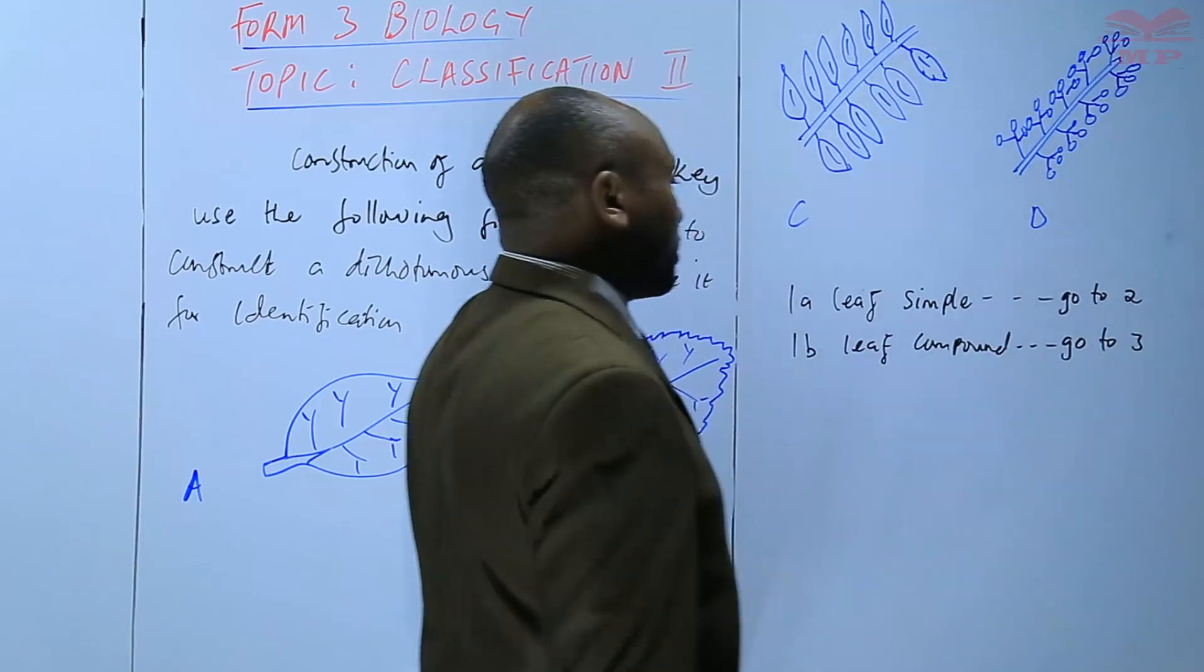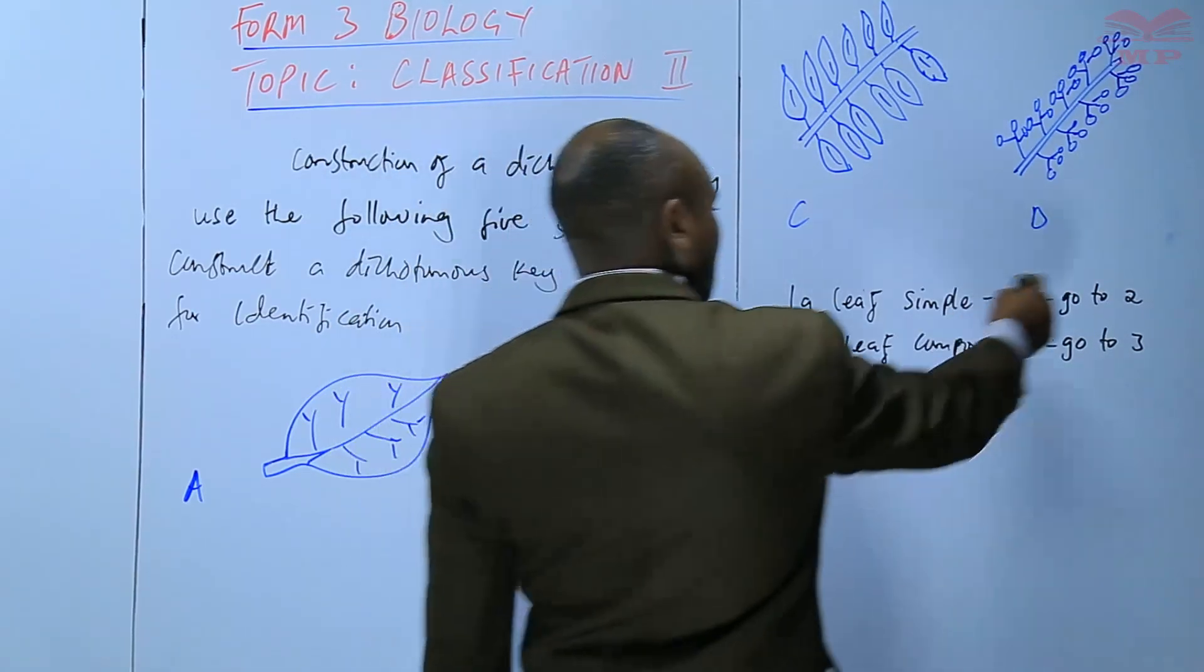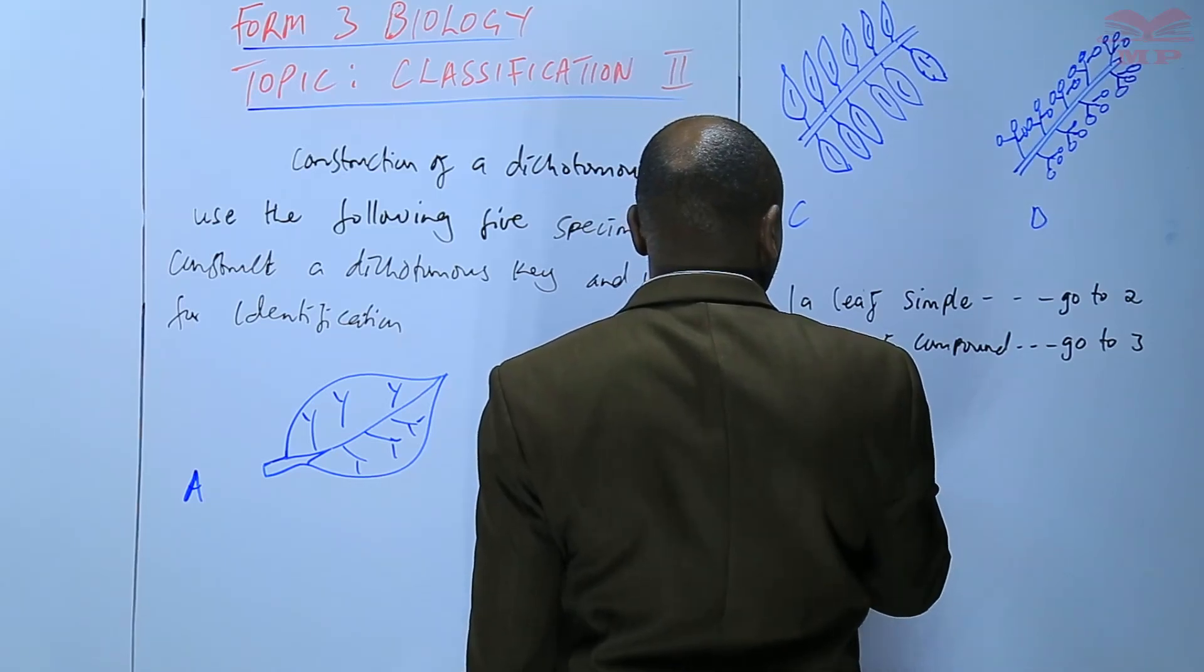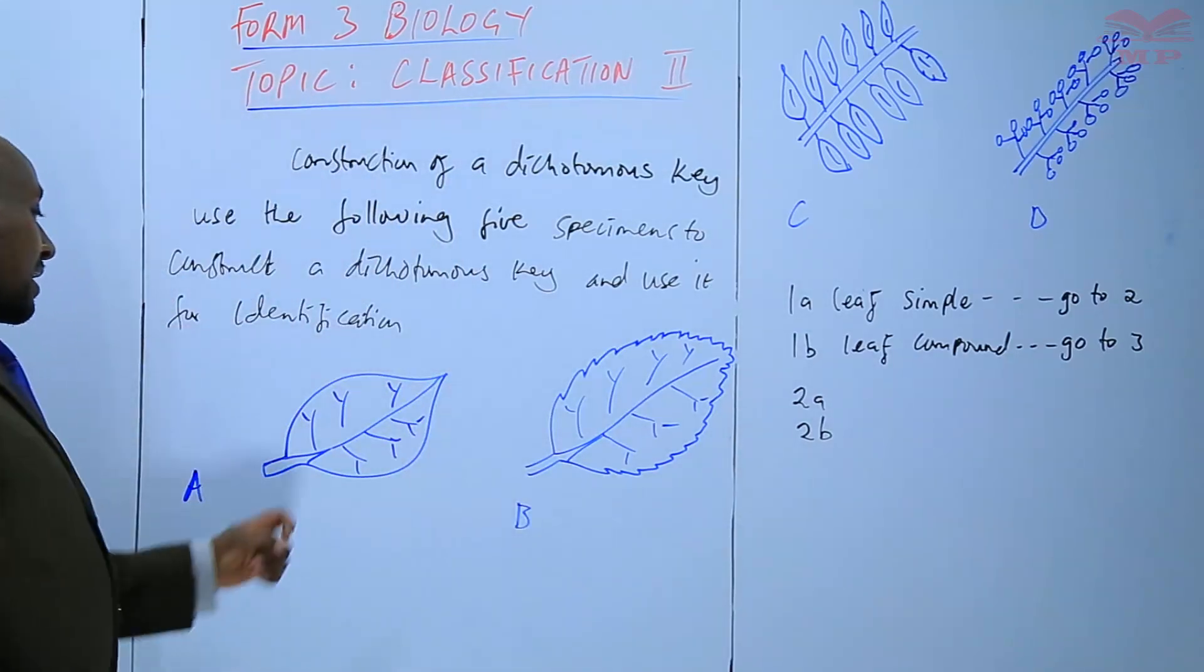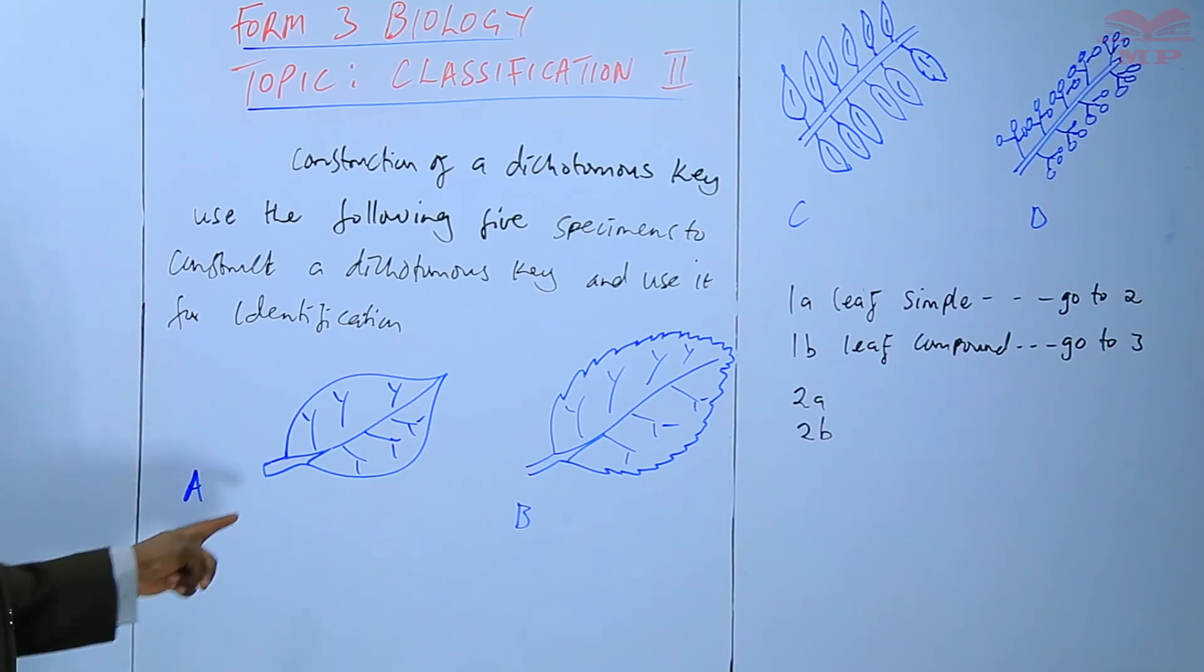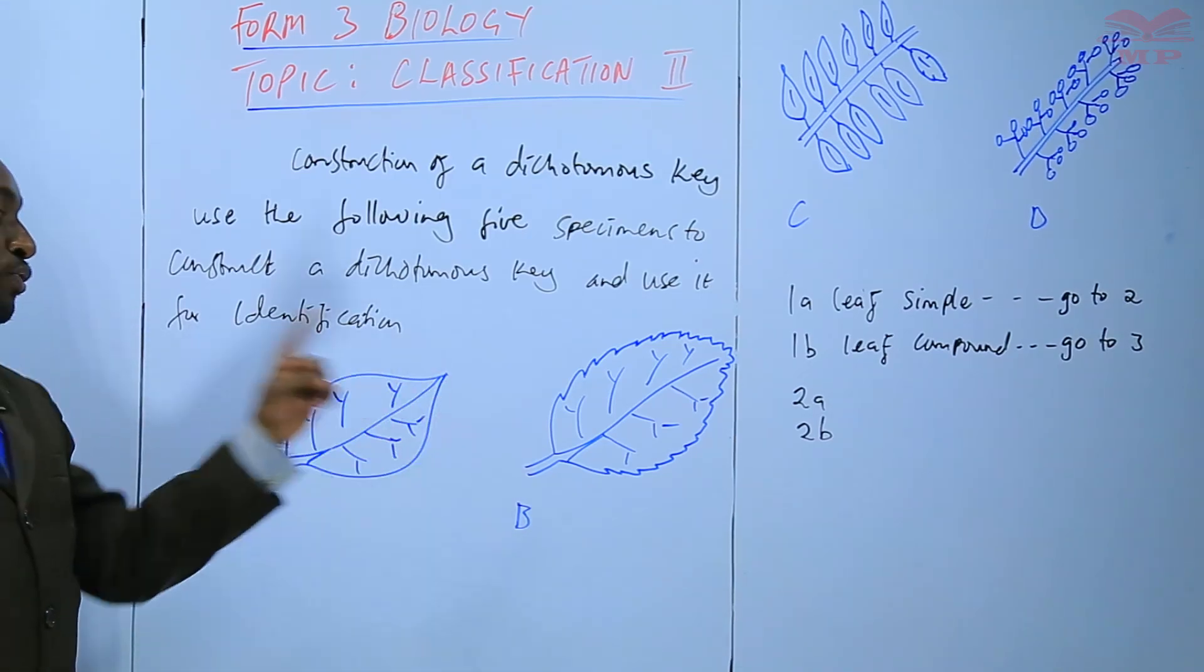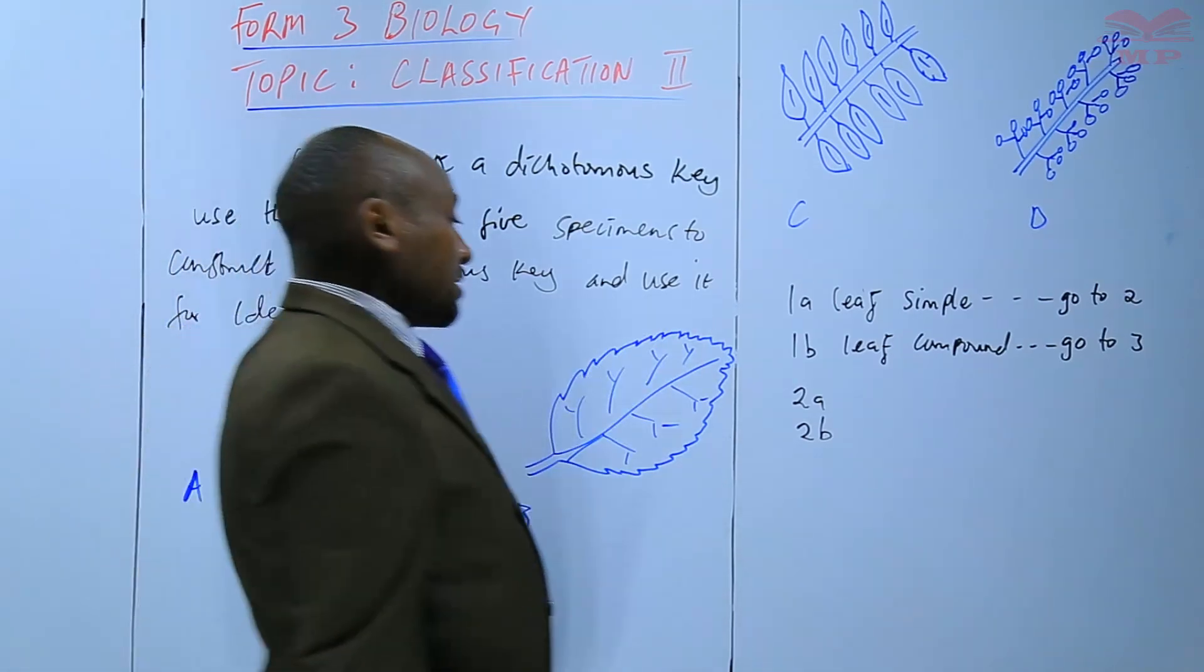We cannot go to two because two is for the simple leaves. In two, we'll have two A and two B. Of the two leaves that are simple, that is A and B, the difference that is there is in terms of the leaf margin. Leaf margin here in A is entire or is a smooth one, but in B, the leaf margin is serrated. You can say A, a leaf margin, entire,